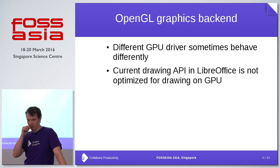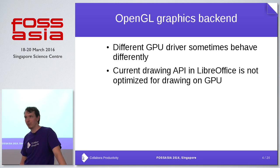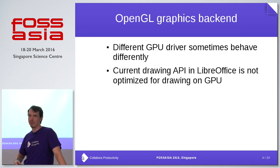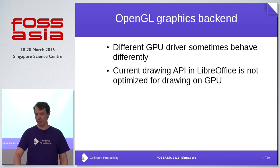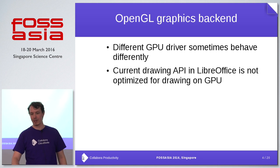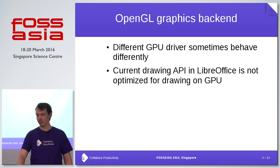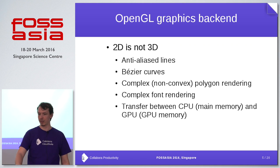The next problem is that the current API for how LibreOffice draws things is not really designed for how a GPU does drawing and not optimized for it. Generally you can draw things, but you cannot draw them fast enough because you have to do a lot of switches and texture uploads that are unnecessary — just because the API is not really optimized for drawing on the GPU.